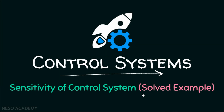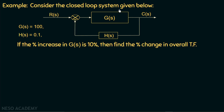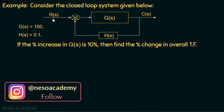In the previous lectures we discussed sensitivity of control systems. Now in this presentation we are going to take one example based on sensitivity of a control system. Consider the closed loop system given below, in which R(s) is the reference input, C(s) is the controlled output, G(s) is the forward path gain and G(s) is equal to 100, and H(s) is the feedback path gain and H(s) is equal to 0.1.